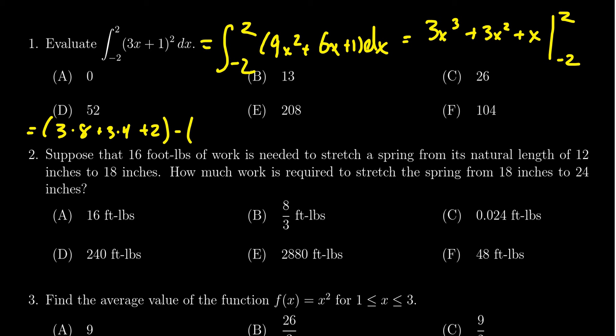When we plug in the negatives there, you're going to get 3 times negative 8 plus 3 times negative 4, actually positive 4, square there. And then you're going to get a negative 2, like so.